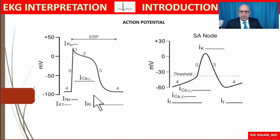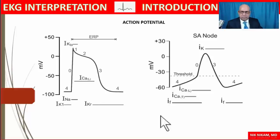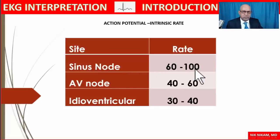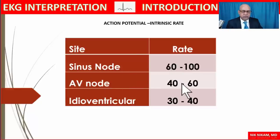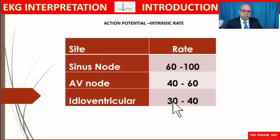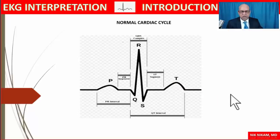The sinus node has spontaneous depolarization capacity — its resting membrane gradually rises and creates an action potential on its own, influenced but not dependent on sympathetic or parasympathetic input. In atrial and ventricular musculature, the resting membrane potential is relatively constant unless no stimulus arrives. The sinus node's intrinsic rate is 60 to 100 beats per minute; it suppresses spontaneous activation of other structures. If it fails, the AV node takes over at 40 to 60 bpm; if the AV node also fails, the idioventricular rhythm is 30 to 40 bpm.